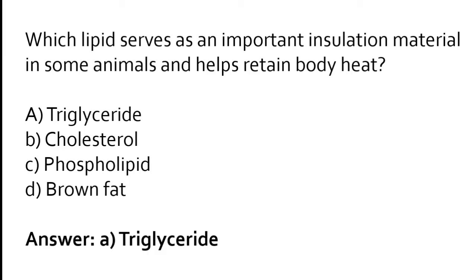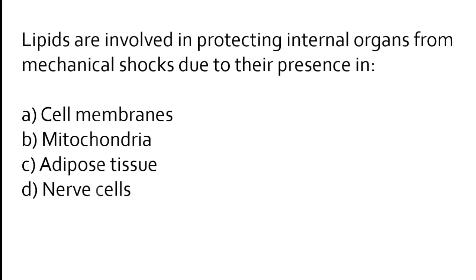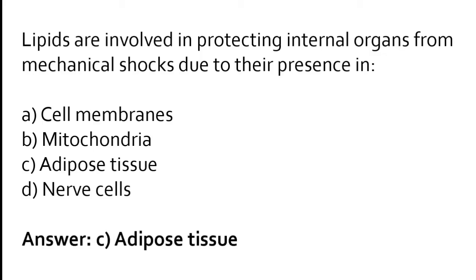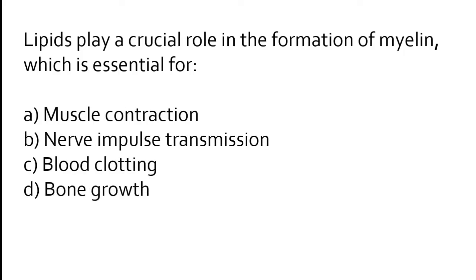Lipids are involved in protecting internal organs from mechanical shocks due to their presence in — cell membranes, mitochondria, adipose tissue, or nerve cells? The correct answer is option C: lipids are involved in protecting internal organs from mechanical shocks due to their presence in adipose tissue. Lipids play a crucial role in the formation of myelin, which is essential for — muscle contraction, nerve impulse transmission, blood clotting, or bone growth?